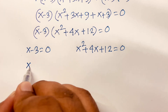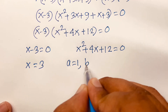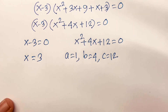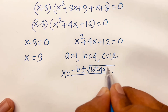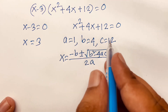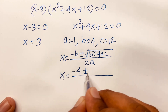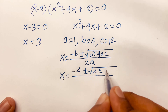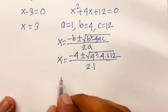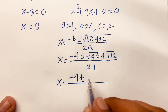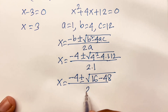From the first case, x equals 3. For the second case, it is a quadratic equation with a equals 1, b equals 4, and c equals 12. Using the quadratic formula: x equals minus b plus or minus square root of (b squared minus 4ac) over 2a. Substituting: x equals minus 4 plus or minus square root of (16 minus 48) over 2.